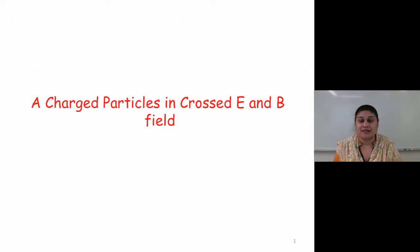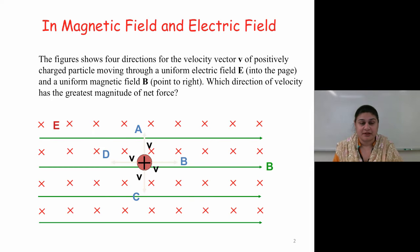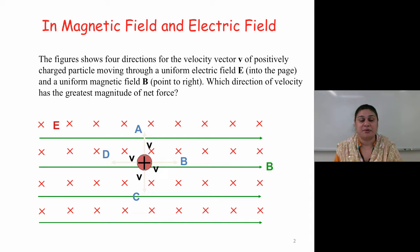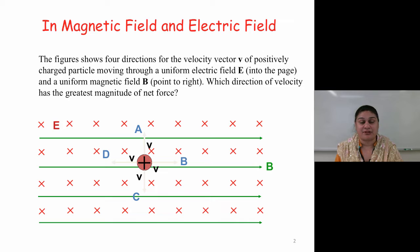Charged particles in crossed E and B fields. Here's a question: the figure below shows four directions of the velocity vector V of positively charged particles moving through a uniform electric field, which is into the page, and a uniform magnetic field, which points towards the right. Which direction of the velocity has the greatest magnitude of the net force?